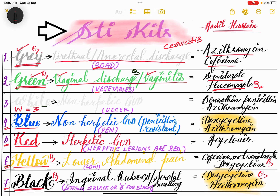The white kit is used for non-herpetic genital ulcer disease and contains benzathine penicillin and azithromycin. Mnemonic: ulcers in the mouth — aphthous ulcers have a white base, so remember white kit is used for non-herpetic genital ulcer disease.